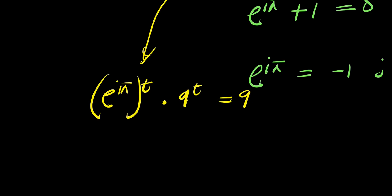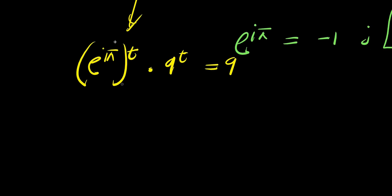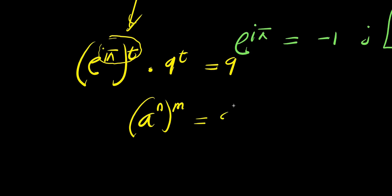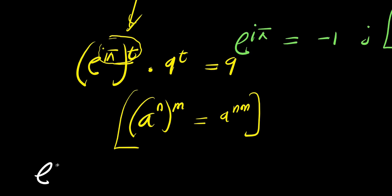Now we multiply the exponents using the identity: if you have (a^n) raised to the power of n, this equals a^(n times n). So we multiply through — we are simply going to have e^(i·π·t) times 9^t equals 9.